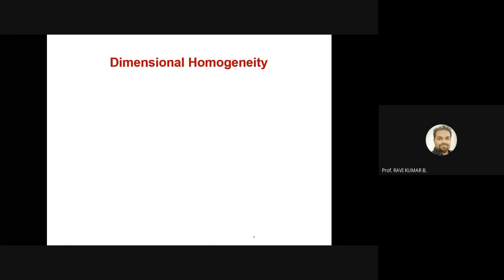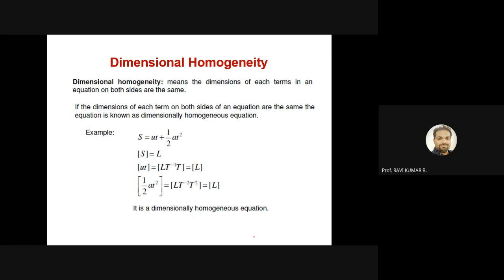Dimensional homogeneity is the concept by which we can balance the units on both sides of any kind of formula. If force equals mass times acceleration, the dimension of force on the left side should be exactly equal to the product of mass times acceleration dimensions on the right side. Dimensional homogeneity means the dimensions of each term in an equation on both sides are the same. If the dimension of each term is the same on both sides, we say that equation is a dimensionally homogeneous equation.